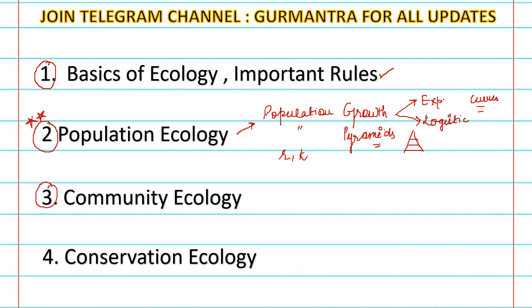Third is community ecology — different types of populations and community structure. There are many questions about species richness, species evenness, and the factors you evaluate on the basis of a community. In addition to numericals, the Simpson diversity index and Shannon diversity index questions are also very common.